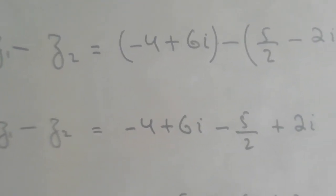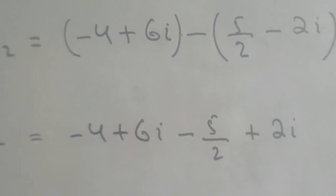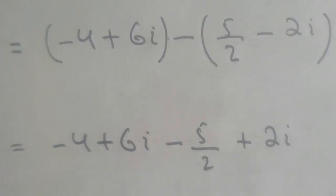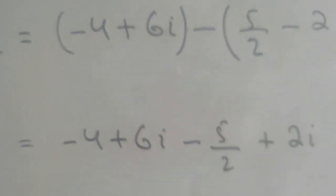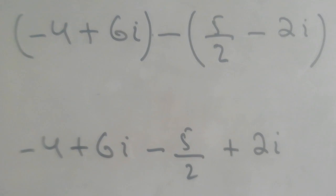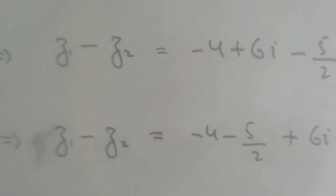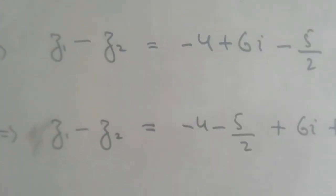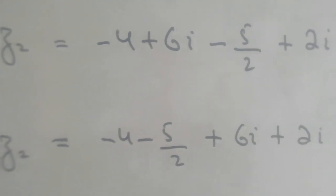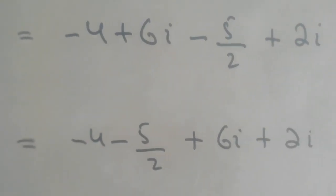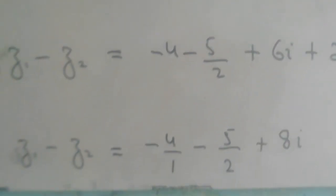Z1 minus z2: the brackets are removed. We have minus 4 plus 6 iota, and then minus bracket 5 iota. Minus plus minus 5 iota, and minus minus plus 2 iota. So z1 minus z2 equals 1 iota, with constants minus 4 minus 5, and iota terms plus 6 iota plus 2 iota.